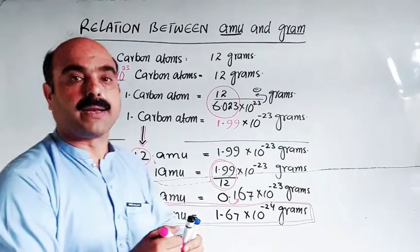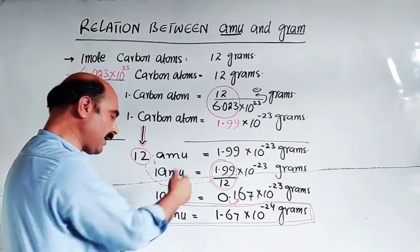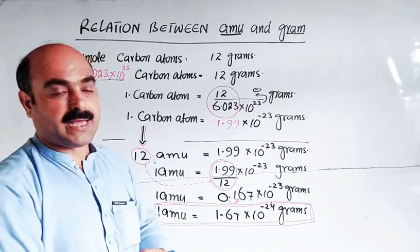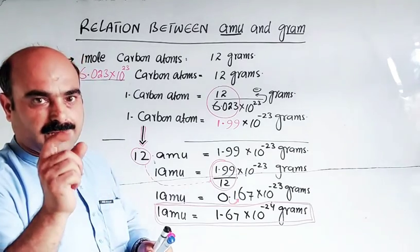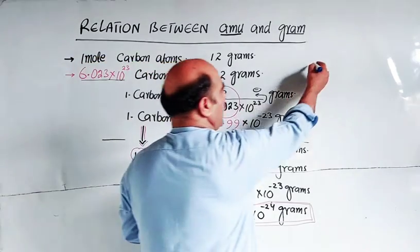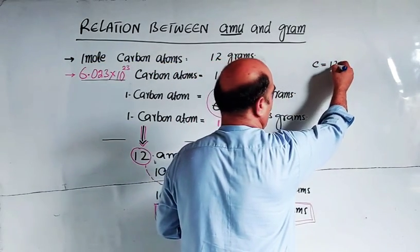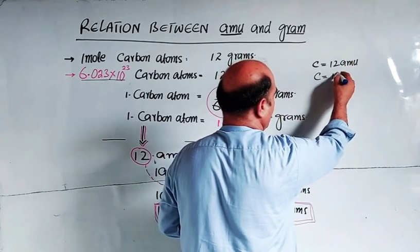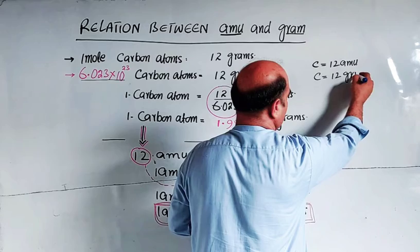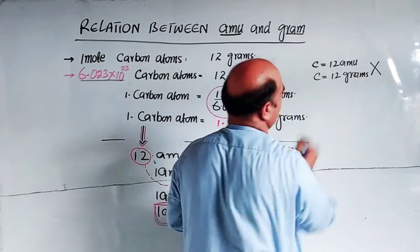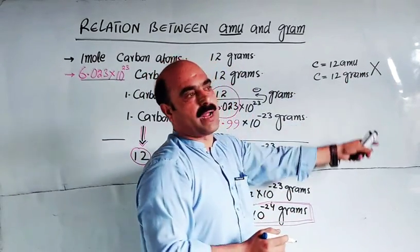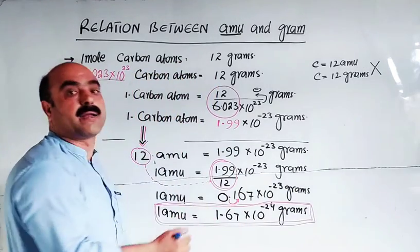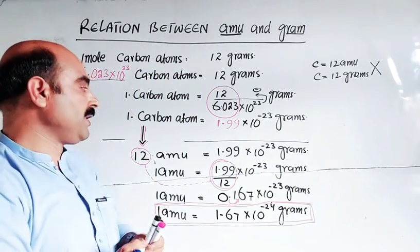This means that 1 amu is NOT equal to 1 gram. Clear? For example, if carbon's atomic mass is 12 amu, you cannot say that carbon's atomic mass is 12 grams. This is wrong.